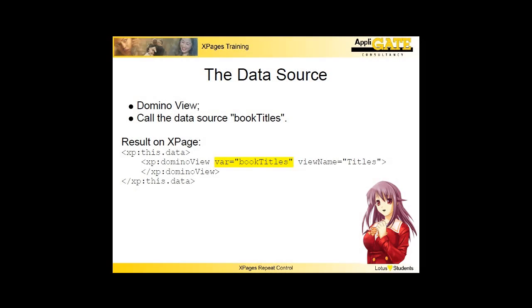You will look at some slides before I show you the demo. First I define the data source on the XPage — this is standard routine. Select the data source in the data view of Domino Designer. The code is added to the XPage, as you see on the slide. Watch the attribute var, which contains the reference of the data source, called Book Titles. This reference I will use in the repeat control.